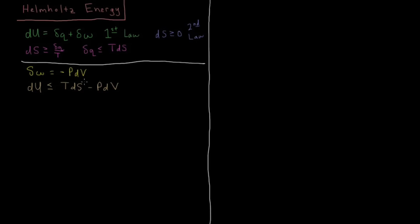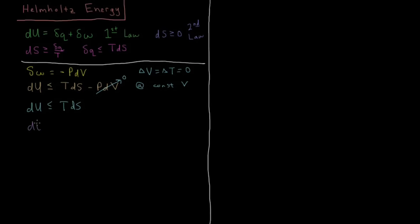These types of differential statements are going to show up more and more, so pay attention to their form. For a constant volume and constant temperature process, dT and dV are both zero. Since dV = 0, the pdV term vanishes, and our expression becomes du ≤ T dS. Rearranging, du minus T dS is less than or equal to zero.